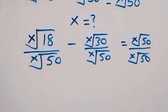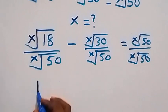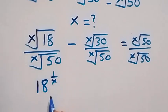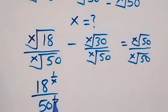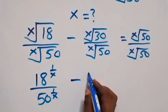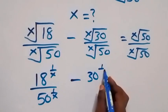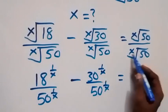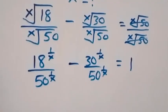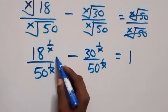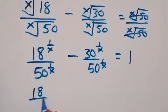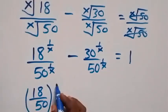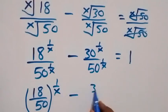Then from here we can write this as 18 raised to power 1 over x, following the laws of indices, divided by 50 raised to power 1 over x, then minus 30 raised to power 1 over x divided by 50 raised to power 1 over x. These cancel each other and we have 1 on the right. From the law of indices, same power, we can write this as 18 over 50 raised to power 1 over x, minus 30 over 50 raised to power 1 over x, equals to 1.